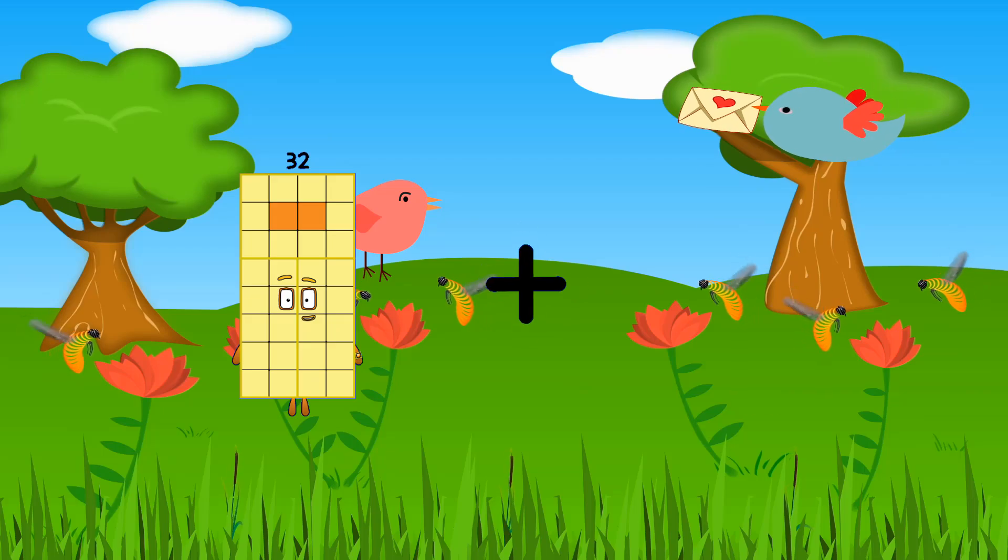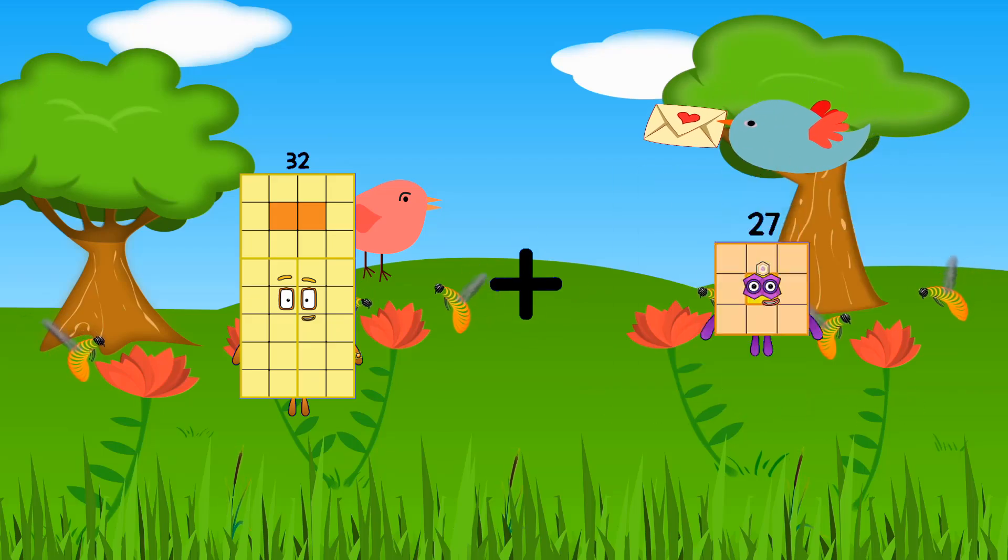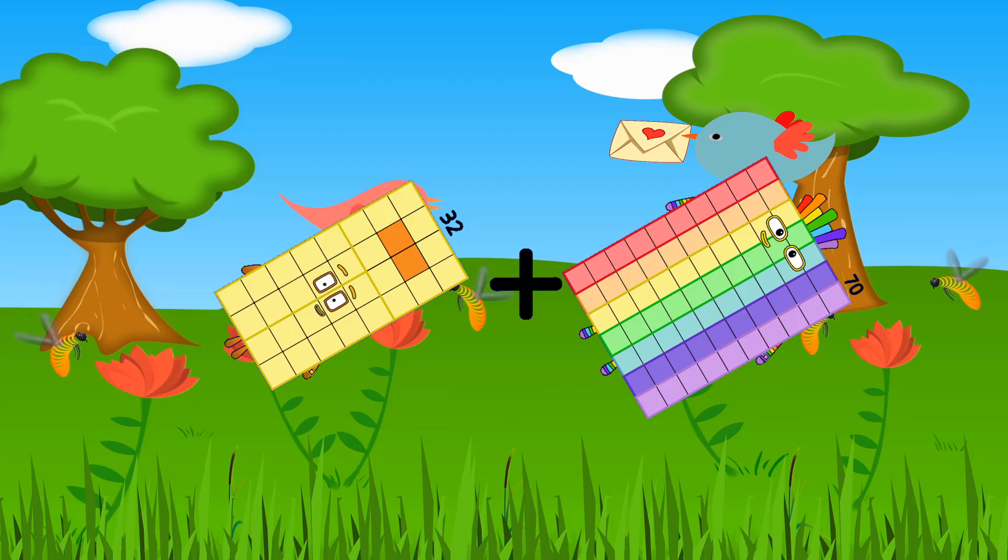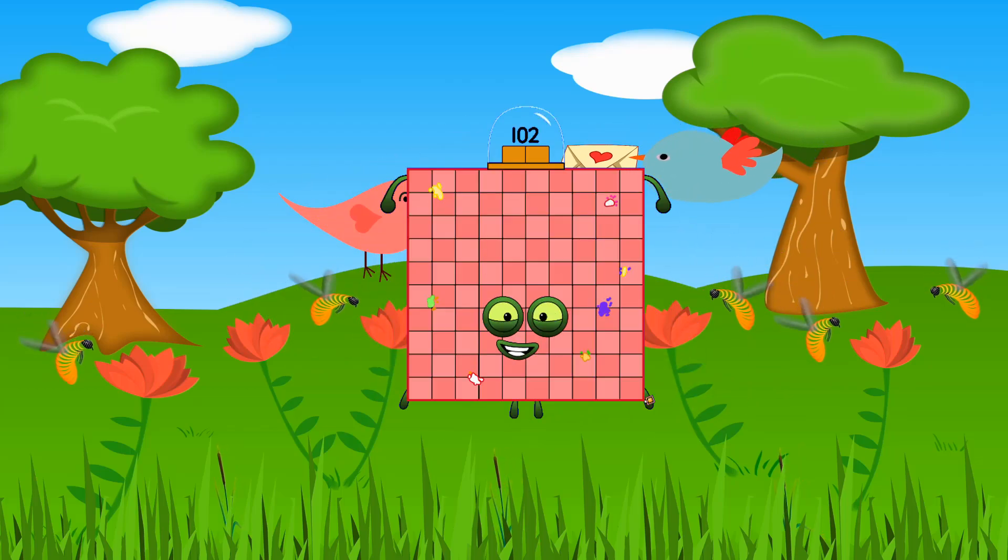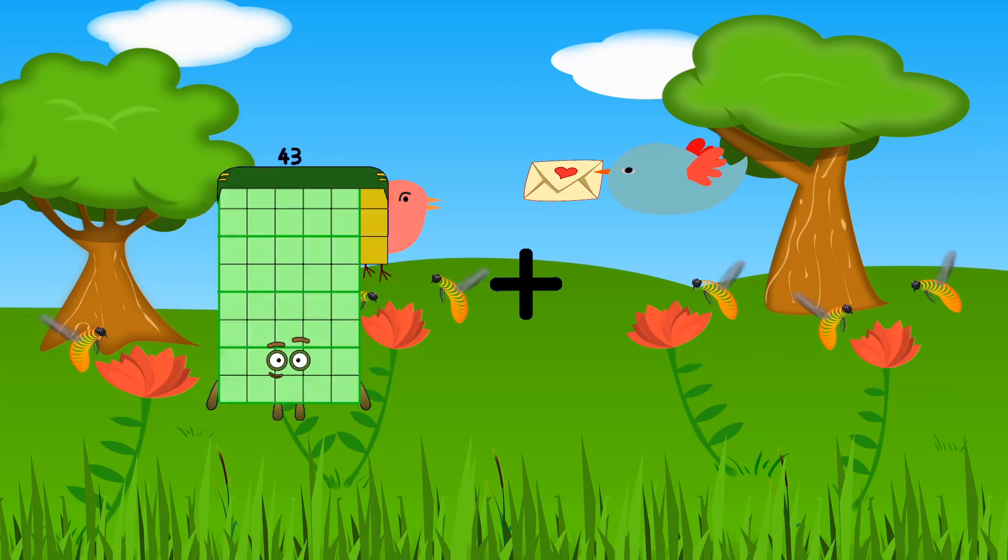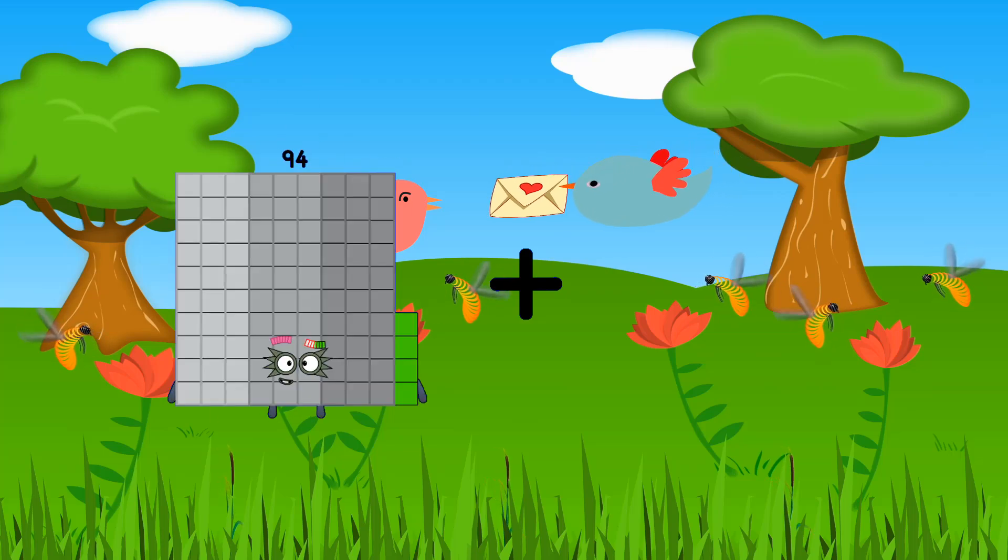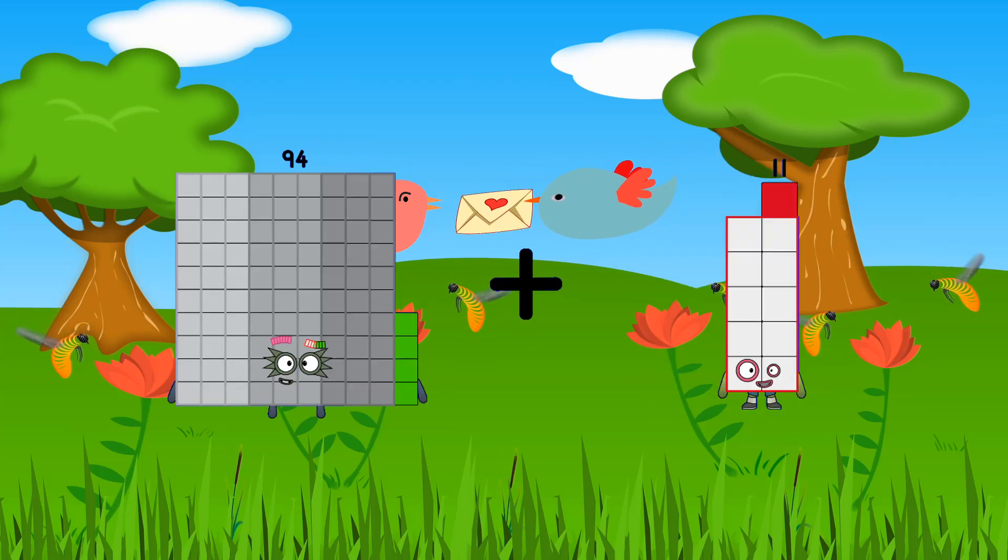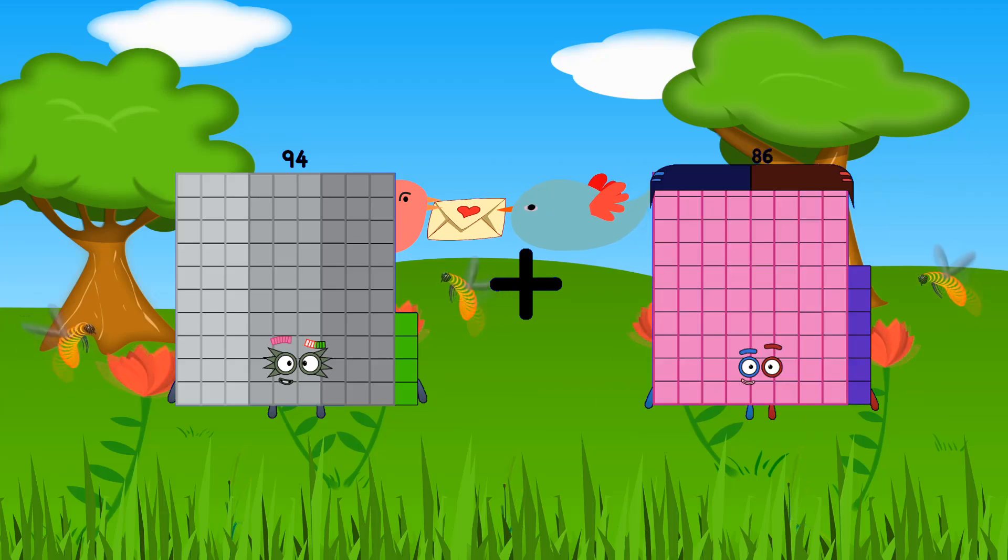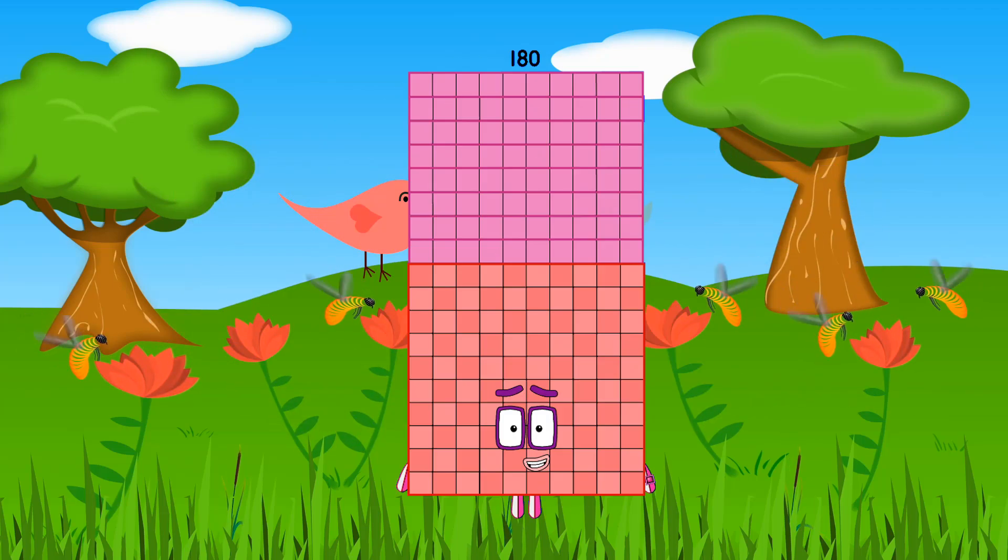32 plus 70 equals 102. 94 plus 86 equals 180.